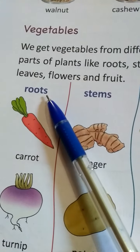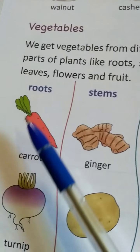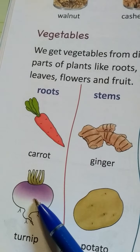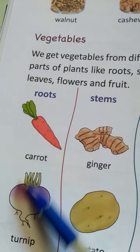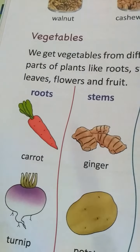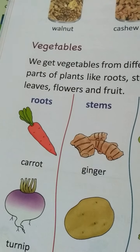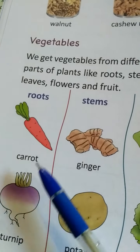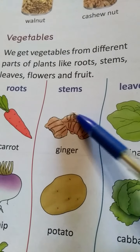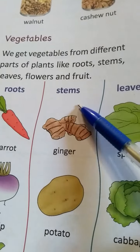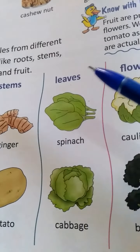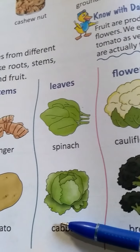Now let's look at each part. From roots, we eat carrots and turnip. Ginger and potato are eaten as stems. From leaves, we eat cabbage and spinach.